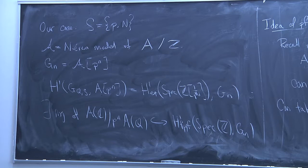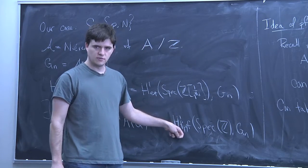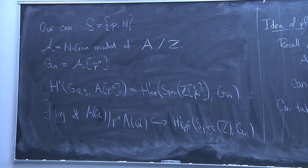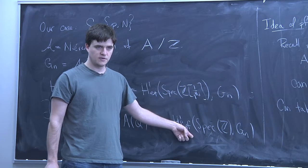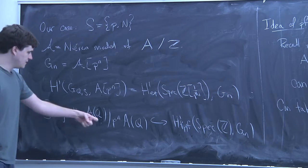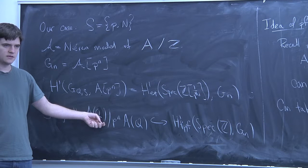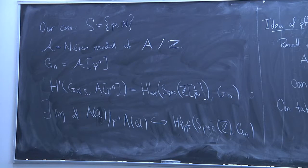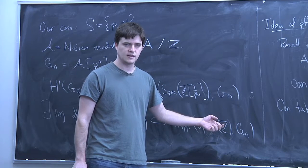G_n is a finite flat group scheme over Spec Z. So there is an injection of A(Q)/P^n into this H^1. This is how we're constraining what's going on at P and N. The plan is to show that this H^1 group is bounded — the cardinality is bounded independent of n. That means A(Q)/P^n A(Q) has bounded cardinality, which forces rank zero: because if you had a Z inside A(Q), you'd get Z/P^n mapping in, giving arbitrarily large quotients. So the main point is to bound this H^1, and for that we need to understand what group schemes arise and what their fppf cohomology looks like.